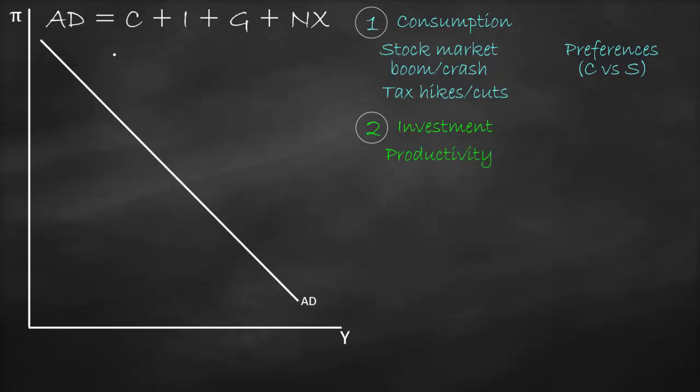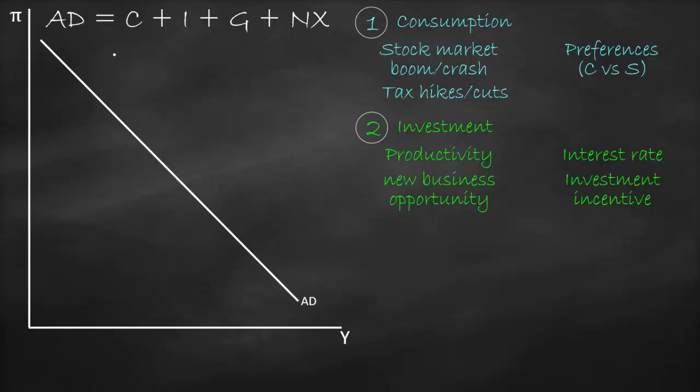The second factor is investment. If companies become more productive, aggregate demand shifts to the right. Interest rate has a negative relationship with investment — if interest rates go down, investment increases and AD shifts right. New business opportunities increase investment and shift AD right. Government investment incentives such as free land, grants, subsidies, or lower taxes will also increase investment and shift AD to the right.